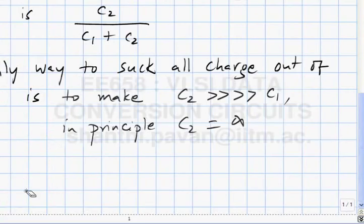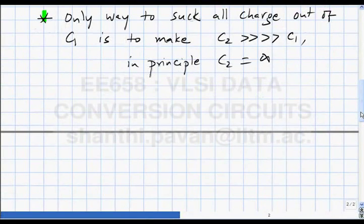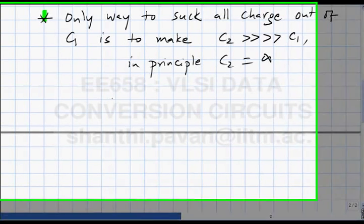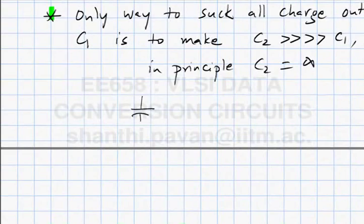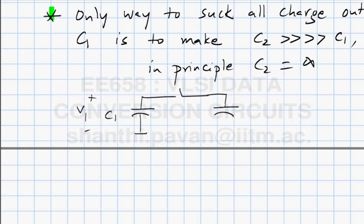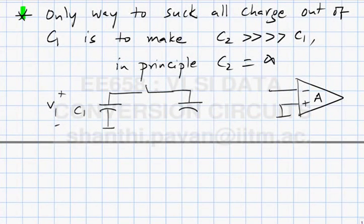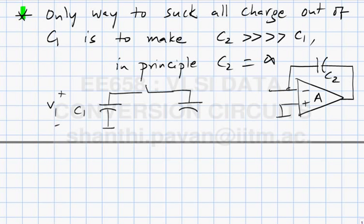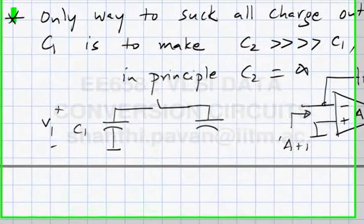Physically implementing infinite capacitance is not possible. From analog circuits, we know we can use the Miller effect: take an amplifier of gain A and put a capacitor of value C2 in feedback — the capacitance looking in is (A+1) times C2.